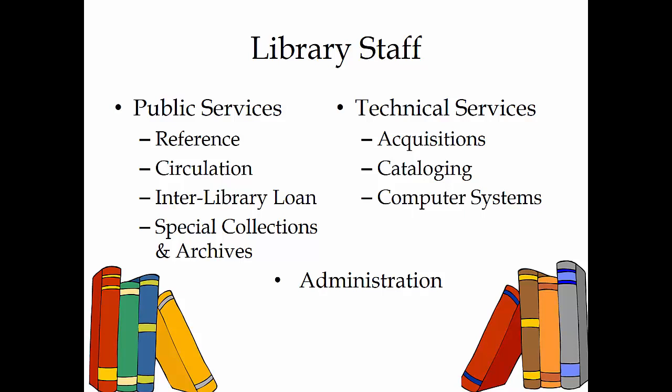However, there are other staff members necessary for a library to function effectively. Behind-the-scenes staff include acquisitions, whose role is to process and track all the materials ordered until they are received by the library. Cataloging staff process the new materials, assigning call numbers, subject headings, and labeling the materials appropriately.